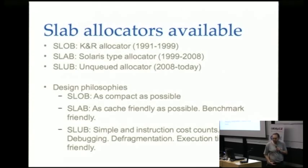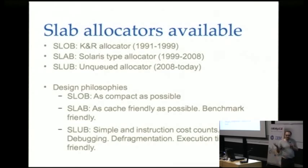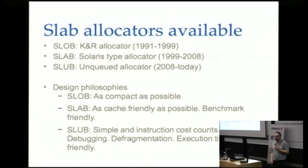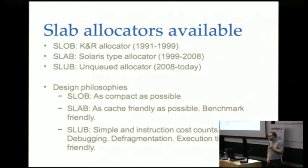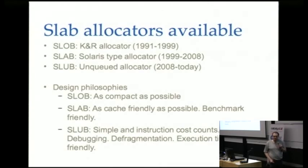Slub was called the unqueue allocator because the slab allocator resulted in an exploding number of queues — most memory seemed to be vanishing into allocation queues. Slub's approach cuts this out. The three allocators now represent distinct design philosophies. Slob is as compact as possible, not wasting any bytes, making it useful for very small devices with small memory sizes — ideal for uniprocessor designs, though performance is somewhat a problem.